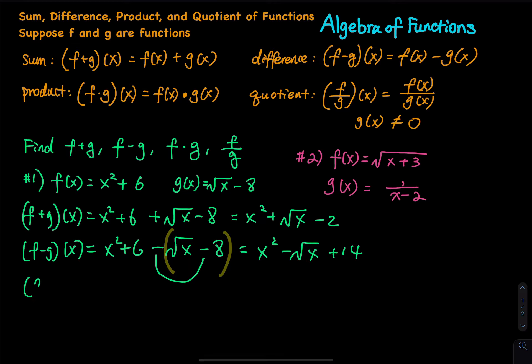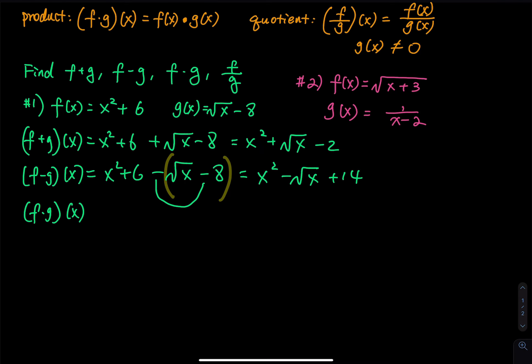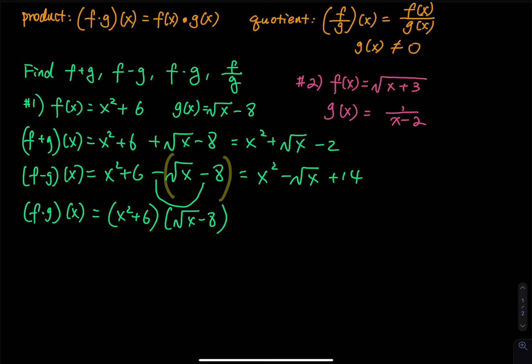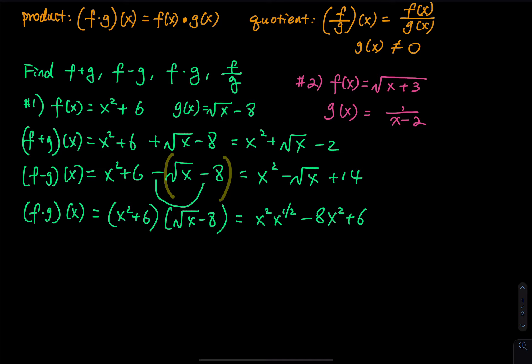For the multiplication, f times g of x: we have x squared plus six, times the square root of x minus a. It is okay to leave it in factor form, but if the textbook or online homework asks you to expand everything, then do it. Expanded: x squared times x to the one half minus 8x squared plus six square root of x minus 48.